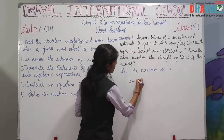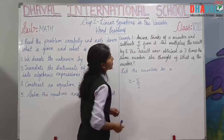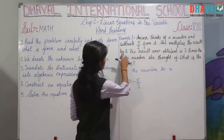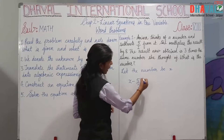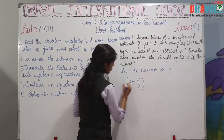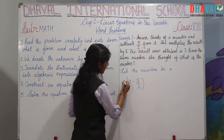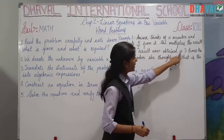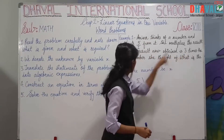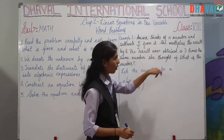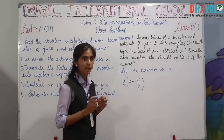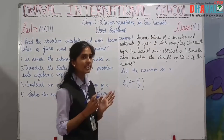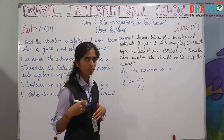अब उसने x में से 5 upon 2 minus किया, तो इसको हम लिखेंगे x minus 5 upon 2। She multiplied the result by 8 — यानि उसने इस पूरे को 8 से multiply किया। The result now obtained is 3 times the same number she thought of — यानि जो answer मिला वो उसी number का 3 गुना था।